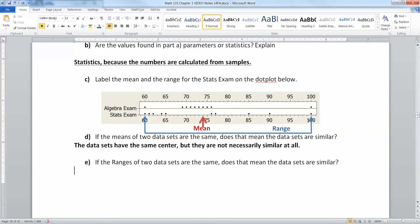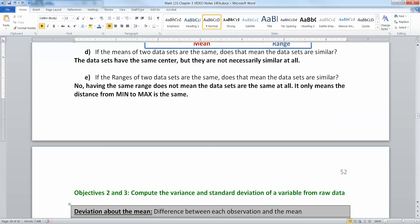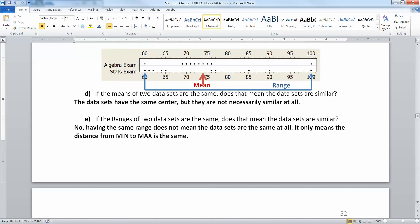What if the two ranges are the same? Does that mean that they're the same? And the answer is no, not at all. Having the same range does not mean the data sets are similar at all. It only means that the distance from max to min is the same. Again, look at these algebra and the stats exam. This algebra exam has 40 distance between 60 and 100, and so does the stats exam. But the inner part is completely different from one to the other. All that having the same range does is tell you that max to min is the same distance. That's it. It doesn't tell you anything more than that.